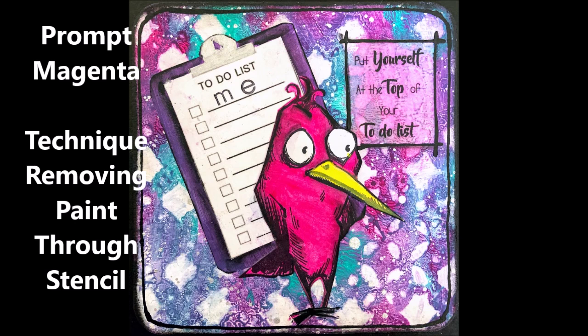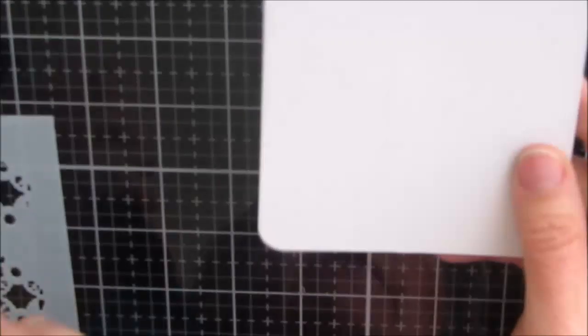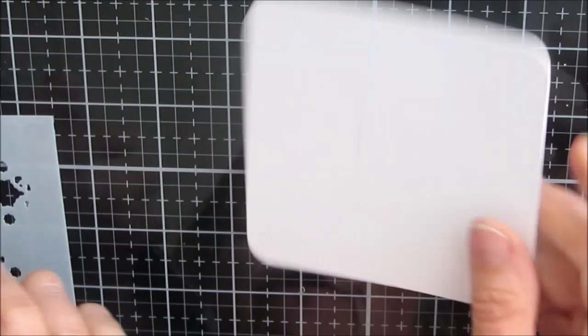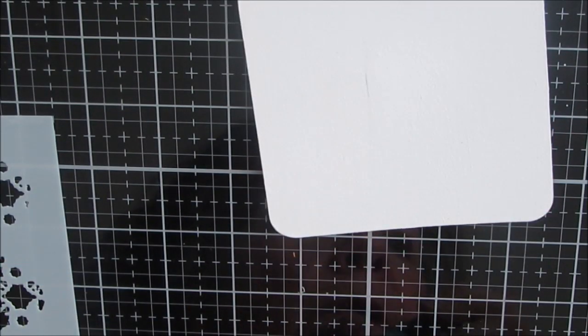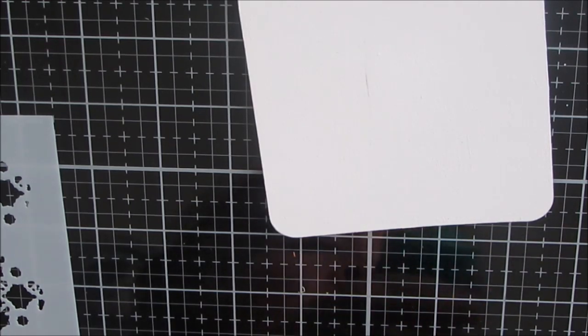This was a really fun project. So I'm starting with the 4x4 cardboard coasters. I've put a coat of gesso on the top and the sides just to seal it in.